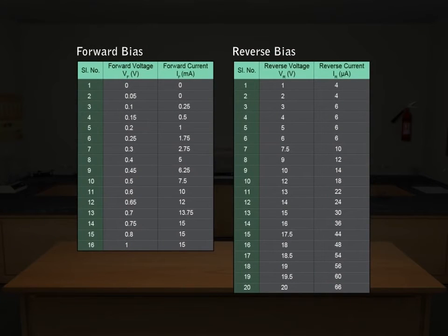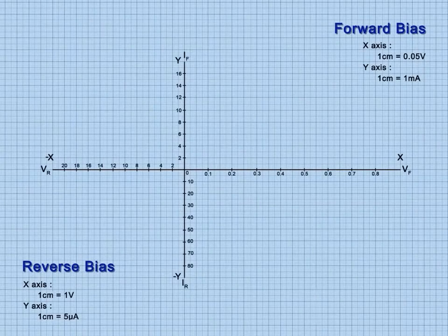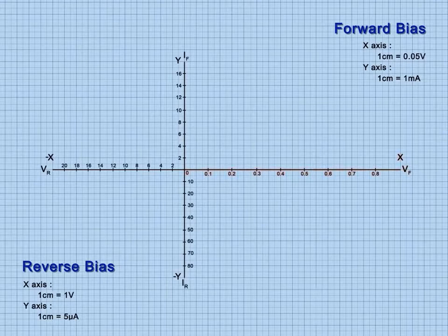Displayed here is the table of observations that records voltmeter and ammeter readings for forward bias and reverse bias. Let's plot the observations made on a graph taking forward voltage along the x-axis and forward current along the y-axis, reverse voltage along the negative x-axis and reverse current along the negative y-axis.